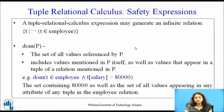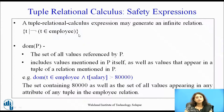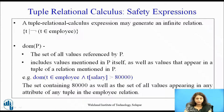Now what are safety expressions? A tuple relational calculus expression may generate an infinite relation. For example, the complement expression — all tuples where t is NOT in employee — would give all tuples except those thousand records in employee, which can be infinite. We define 'domain of p' as all values referenced by p: either constants used in p or all values occurring in the tuples mentioned in p.